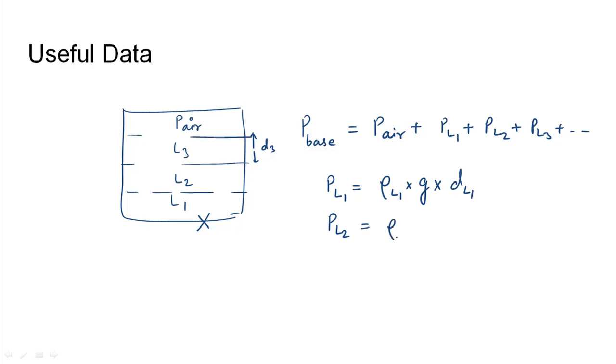it will be PL2 = ρL2 × g × depth of L2, and so on for other liquid layers. Using this equation we can find either the pressure at the base or the pressure of the locked air in the tank. In the given question, the three liquid layers in the tank are mercury whose specific